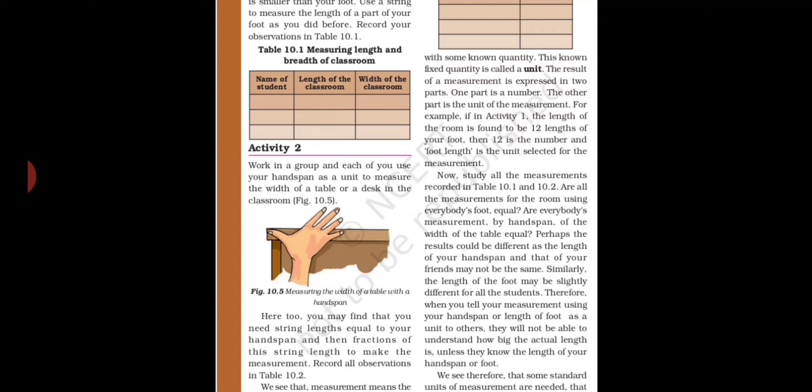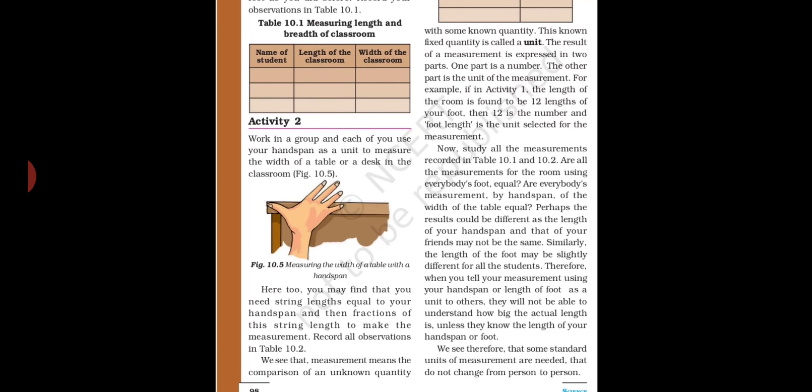Instead of string, you can also use a measuring tape or scale, which are available today. String, hand, and foot were used historically when such measuring tools had not yet been invented. Now, what is measurement? Measurement means the comparison of an unknown quantity with some known quantity.